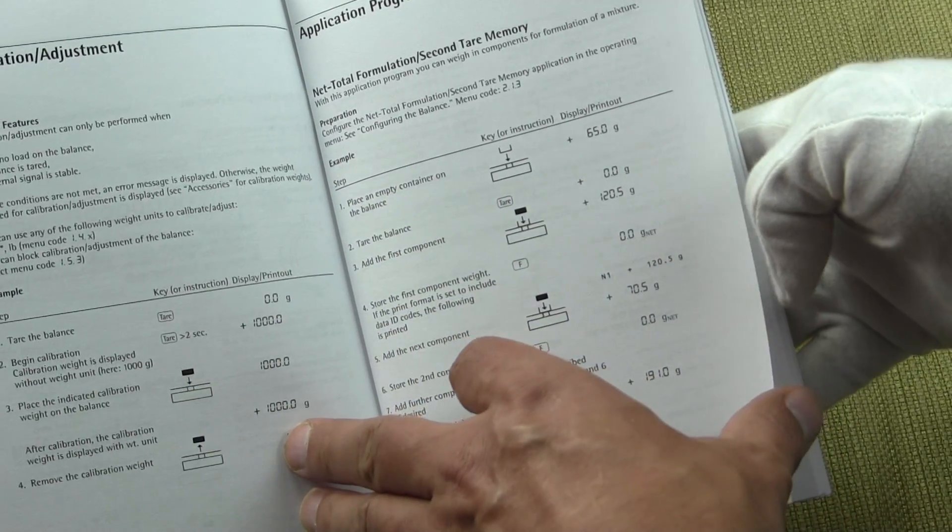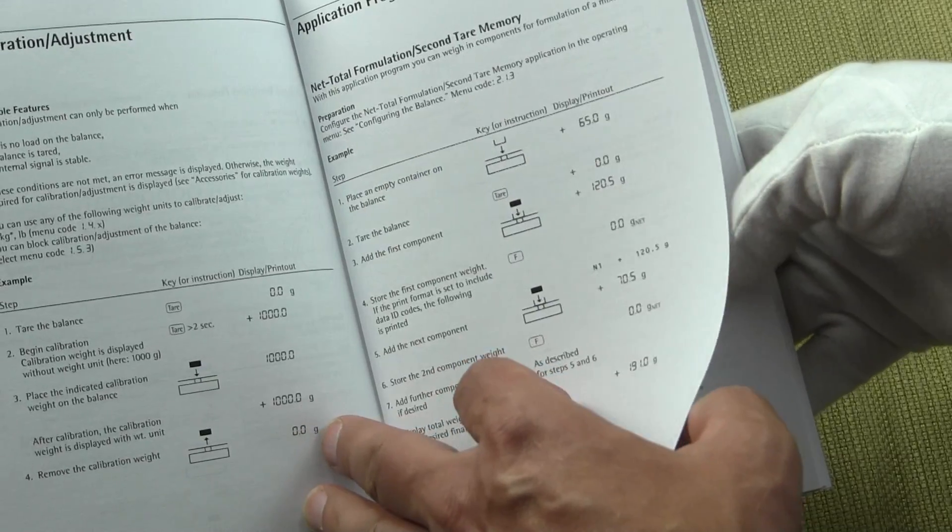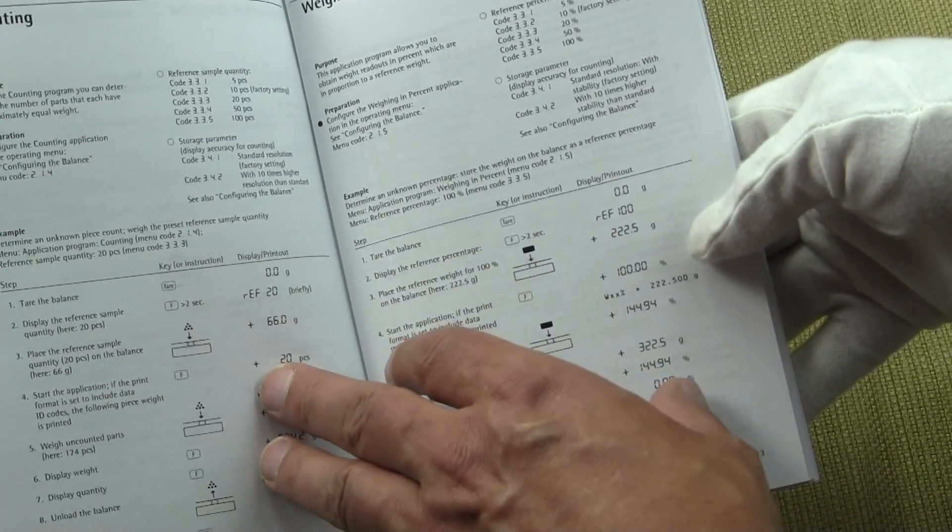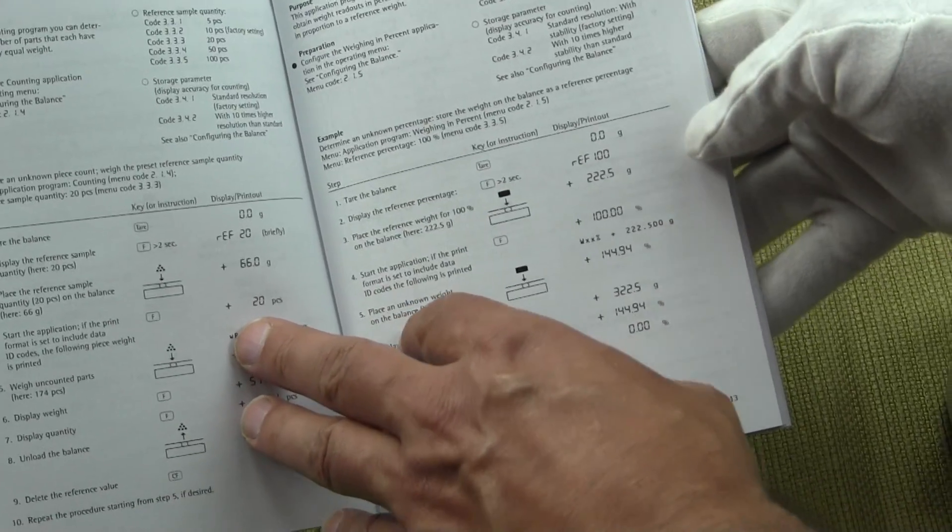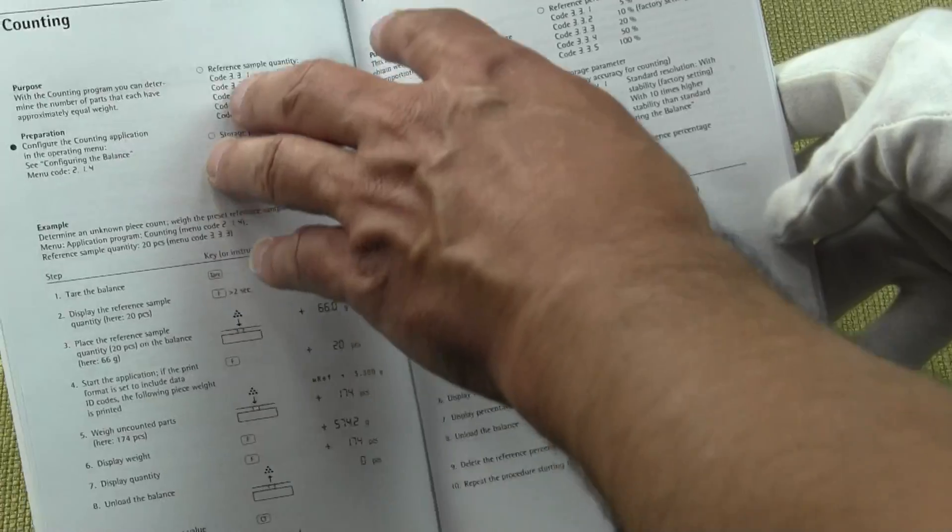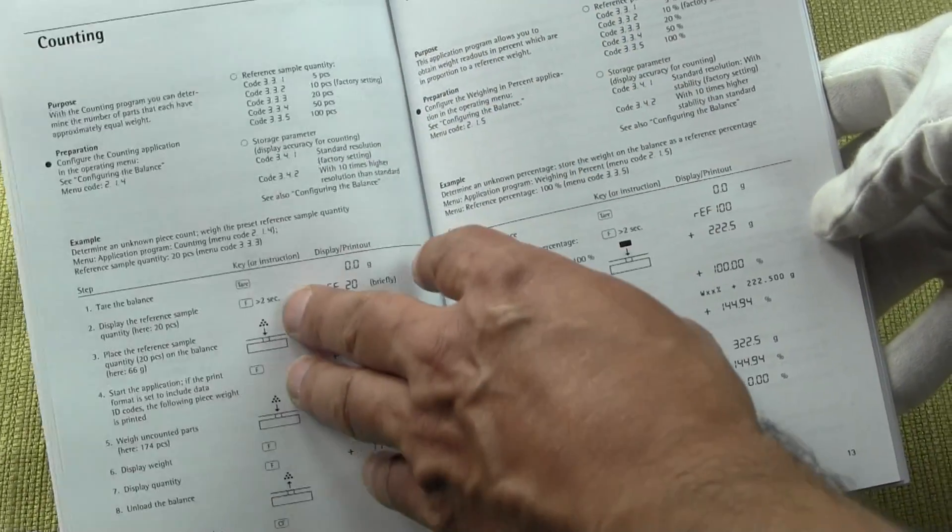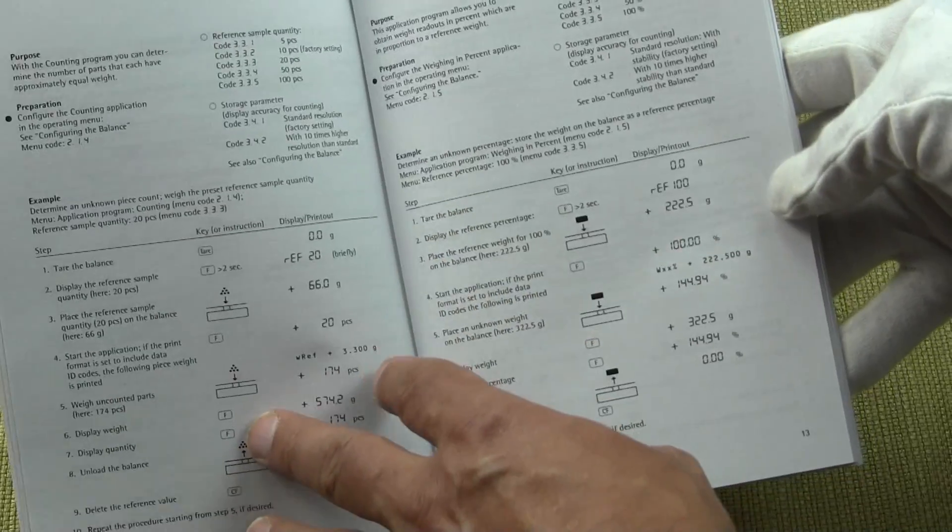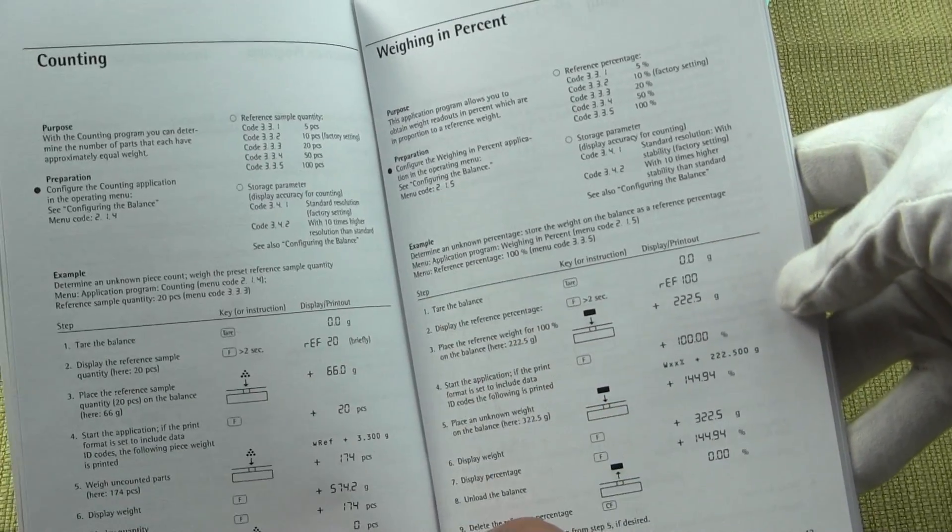So it's extremely easy. Some balance manufacturers out there have their manuals so hard to configure because their goal is to have you sign up for a service contract. As you can see, Sartorius' manual is self-explanatory, giving you all the reference codes for configuring the balance and step-by-step instructions.